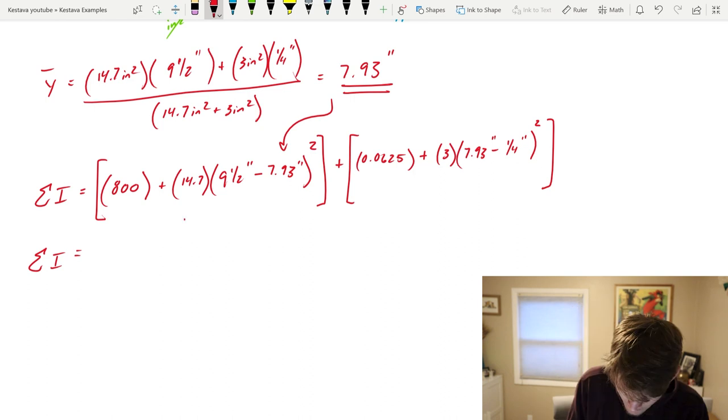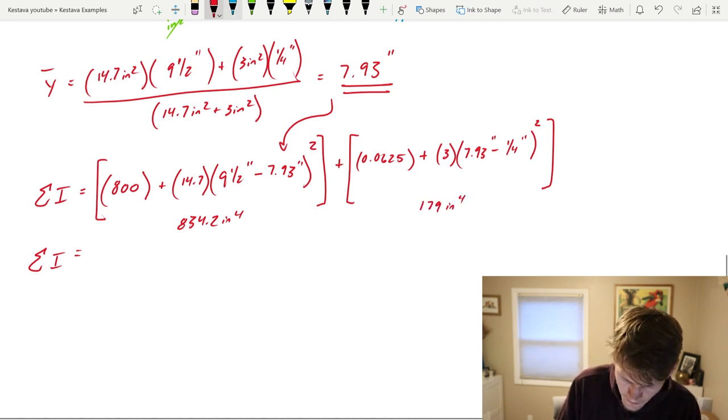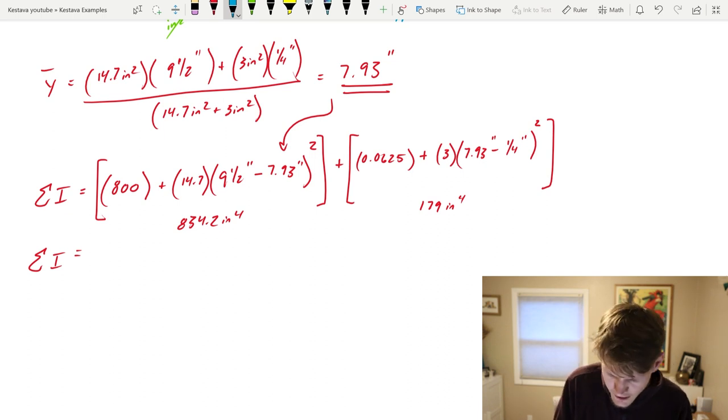And now we need to add our plate portion. Summation I equals the following. This piece is 834.2 inches to the fourth and this component is 179 inches to the fourth. So if you're looking through this equation, this basically equals zero right here. So you could almost ignore that, you pretty much can, it doesn't do anything.